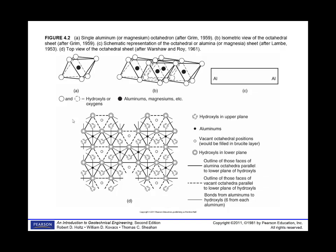The other important building block is the octahedral sheet. It's formed by an aluminum, magnesium, or other cation with hydroxyls or oxygens at the edge points. They form sheets as shown in diagram B, represented by a rectangular diagram shape, and an up-above view shows how they're all linked together.